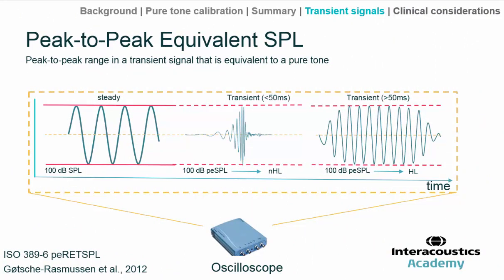An audiological instrument calibrated to reference thresholds using the peak-to-peak equivalent sound pressure level — often abbreviated just to peak-equivalent — is denoted by the use of NHL. Traditionally, NHL meant that references were being used — reference equivalent threshold sound pressure levels — that hadn't in fact been published in international standards, so perhaps locally derived references. But we now have an international standard, ISO 389.6, for a series of transients in common use: tone bursts, clicks, and so on.